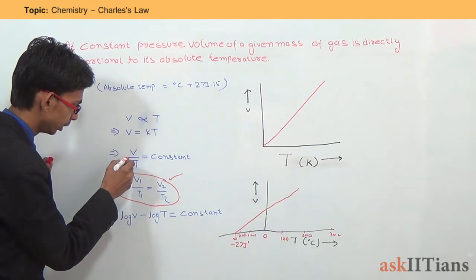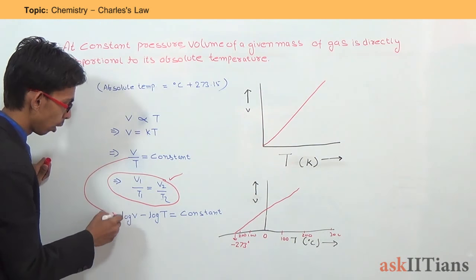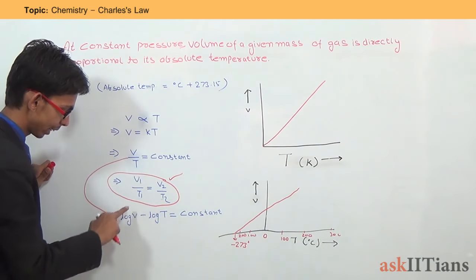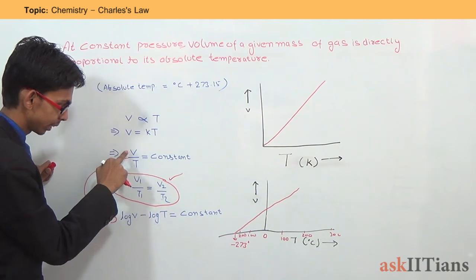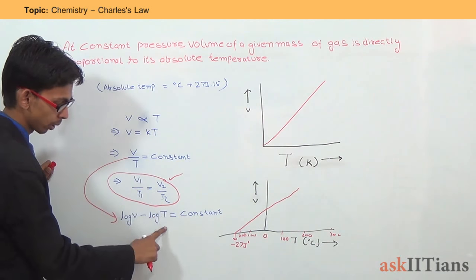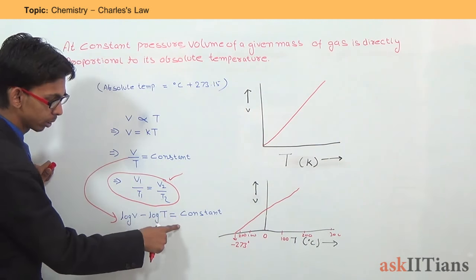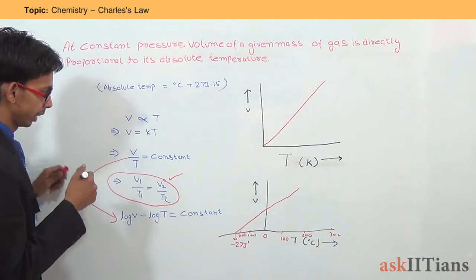Now if we use logarithms, from this equation we get: log V minus log T equals a constant, or log V equals log T.